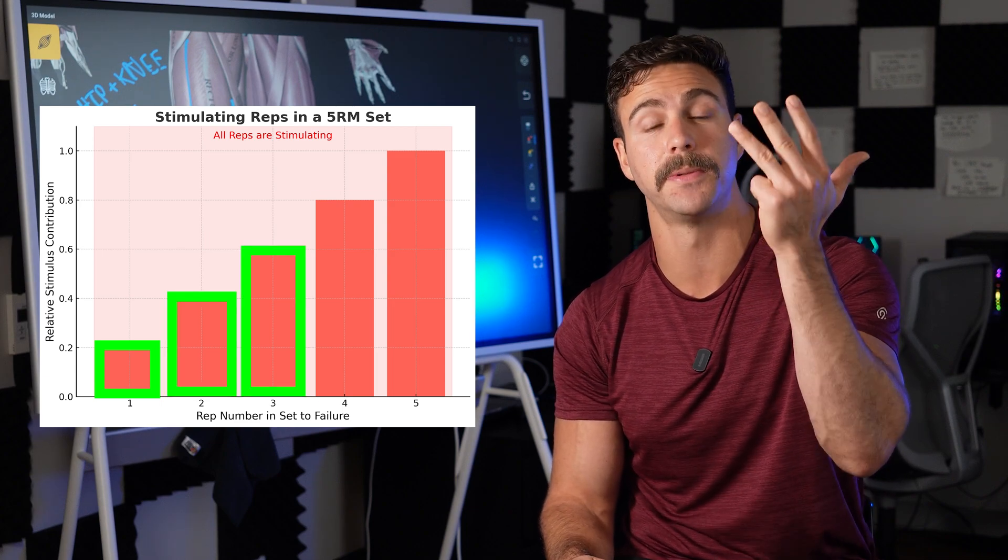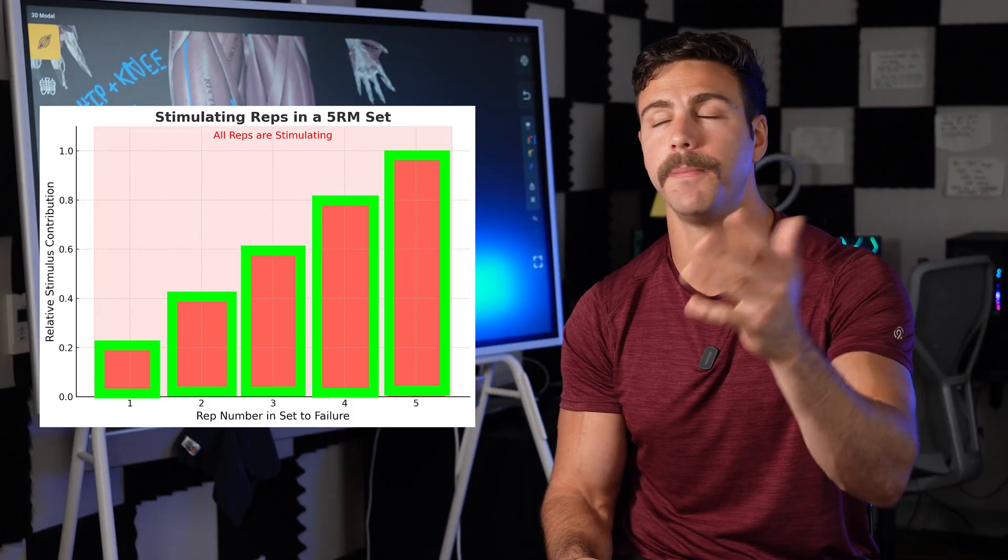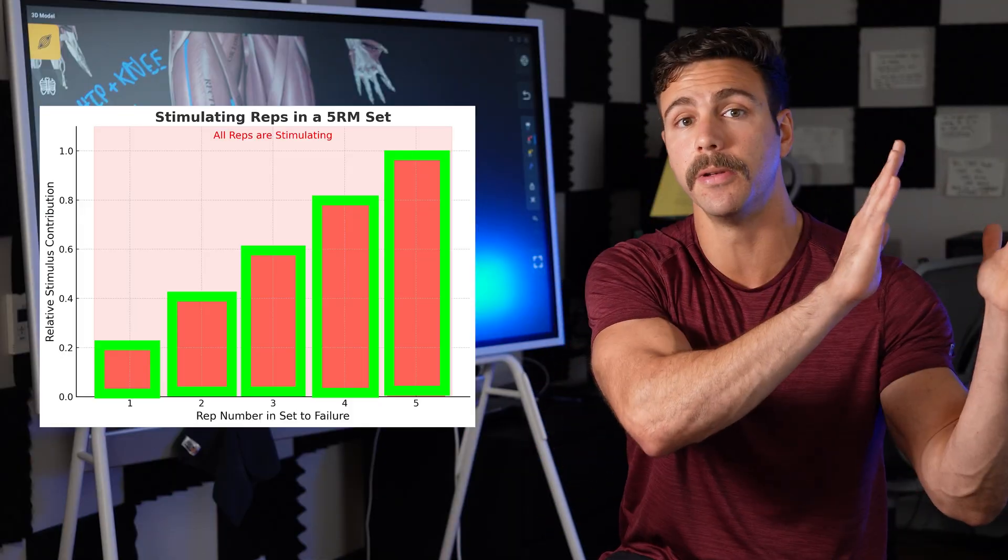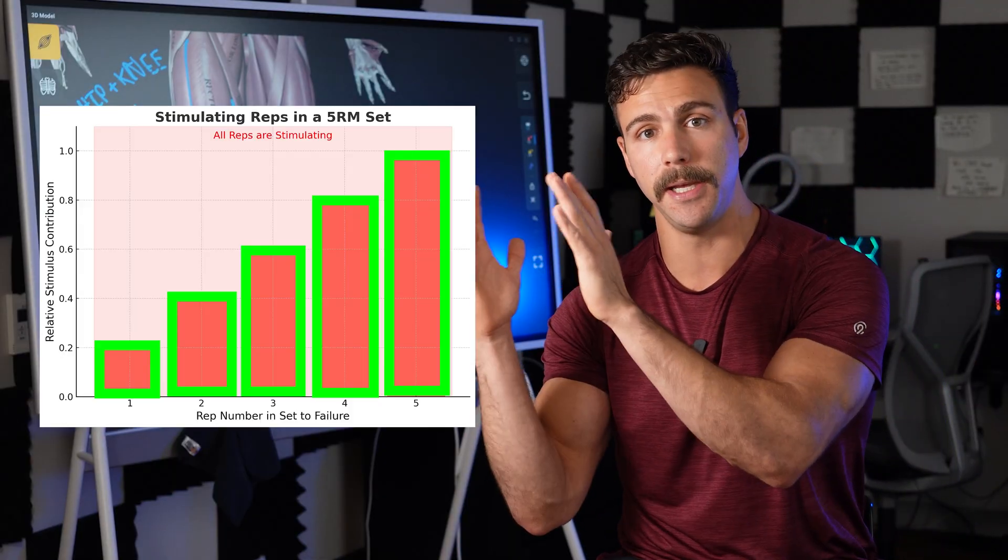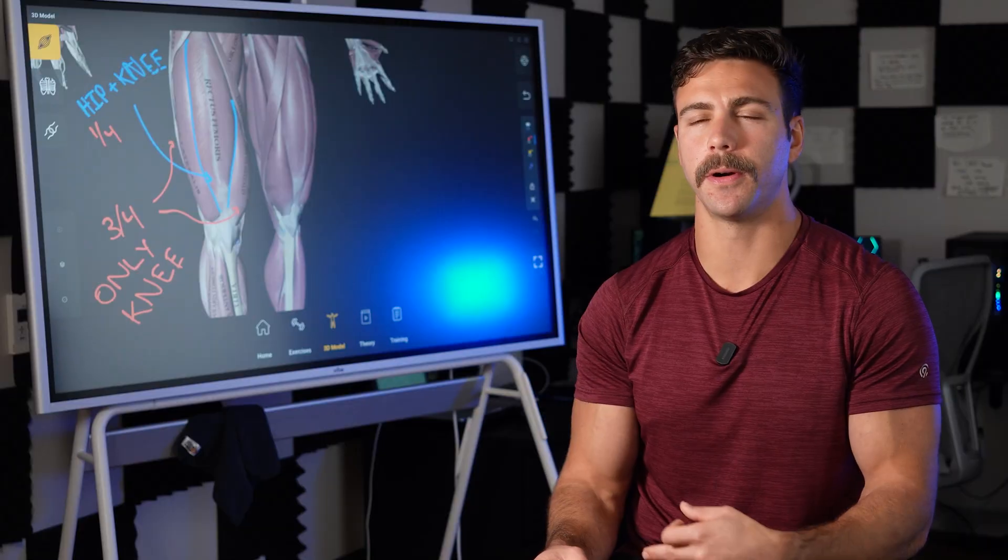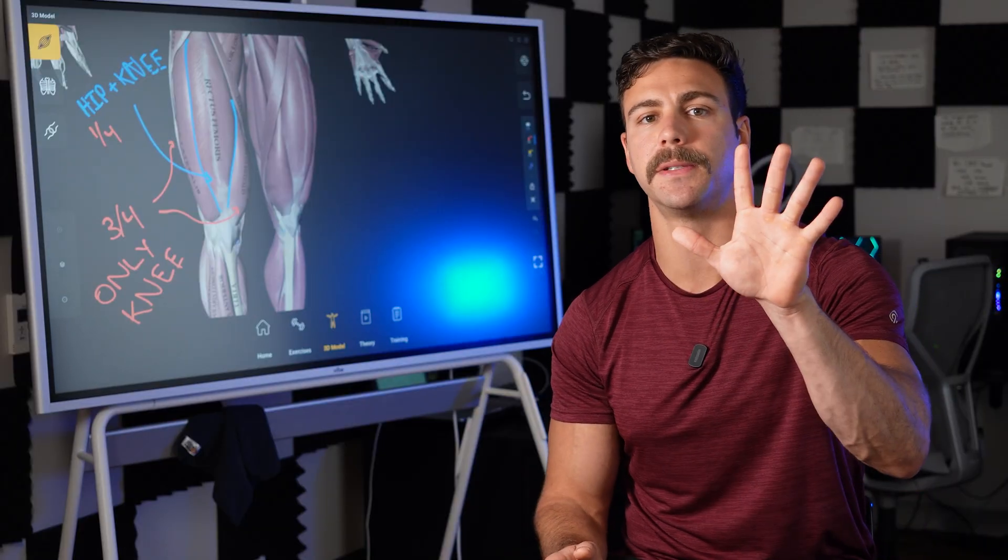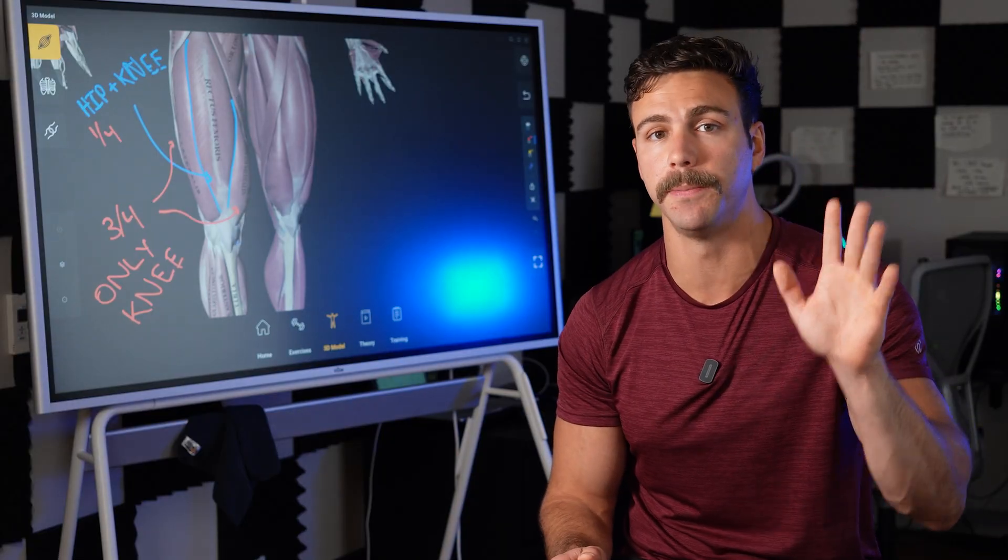80%, and five reps, all 100%. And again, this is specifically talking about the stimulus side of things, not the fatigue side of things. And these numbers aren't necessarily hard numbers. We can't be certain that each of these five reps gives you a clean 20% of the stimulus.